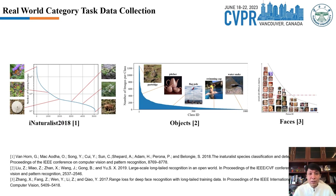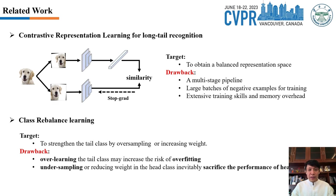Unlike a well-designed balanced dataset, data naturally follows long-tail distribution in real-world scenarios. This means a small number of head classes occupies most of the samples. Moreover, the tail classes are critical for some applications, such as medical diagnosis and autonomous driving. Unfortunately, learning directly from the long-tail data may cause model predictions to overfit toward head classes.